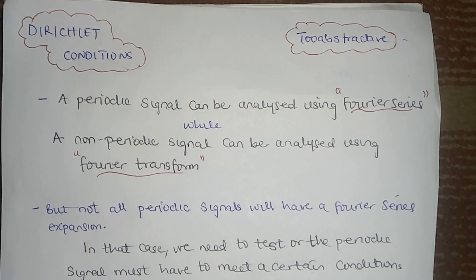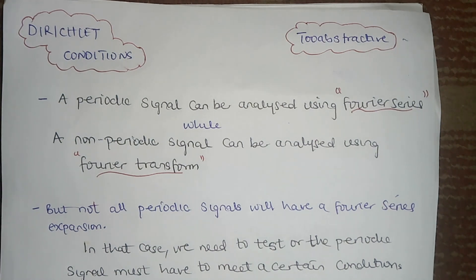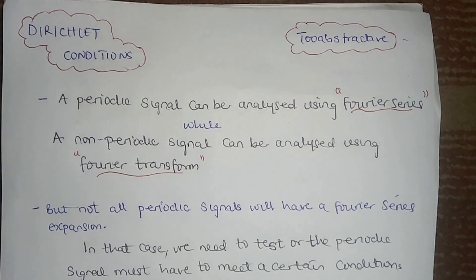Friends, welcome back to 2abstracting. In this video, we are going to be looking at the Dirichlet conditions. These are the conditions that must exist in a periodic signal for it to be analyzed using Fourier. As we discussed in the previous video, whereby we talked about Fourier series in general and demystified Fourier series, we discussed about these conditions briefly.